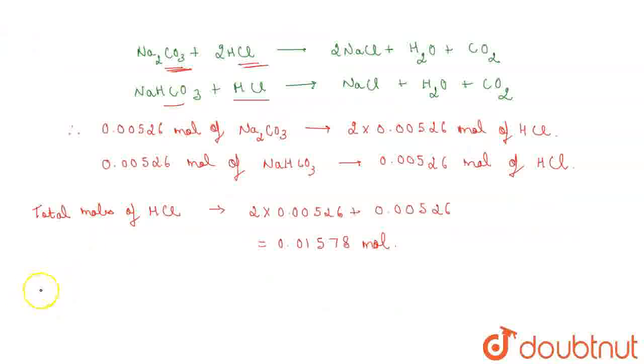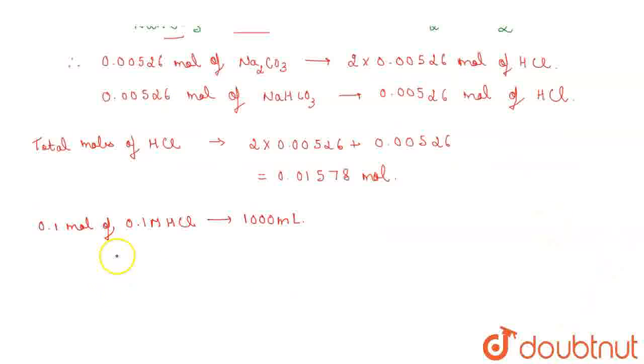Clear? Also, from the question, we can observe that 0.1 mole of 0.1M HCl is present in 1000 ml. So, 0.01578 mole of 0.1M HCl is present in 1000 divided by 0.1 into 0.01578 which will give the value 158 ml.